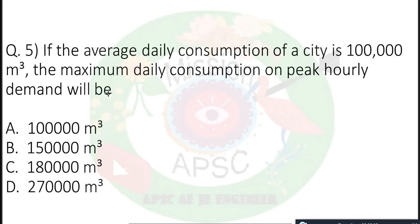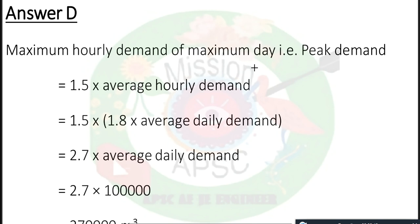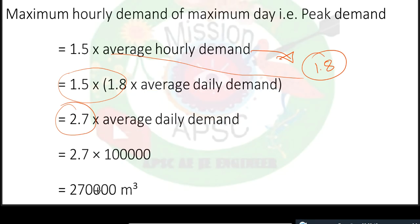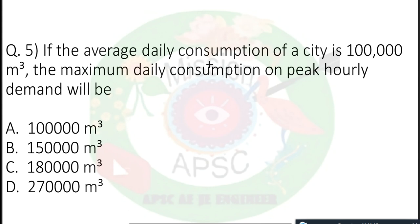Next question: If the average daily consumption of a city is 1 lakh cubic meters, the maximum daily consumption or peak hourly demand will be? Maximum hourly demand of maximum day (peak demand) is 1.5 times average hourly demand. Average hourly demand is 1.8 times average daily demand. So ultimately the factor is 2.7. So 2.7 times average daily demand will be maximum hourly demand of maximum day. The answer will be 2.7 lakh cubic meters. The conversion factor is 2.7.